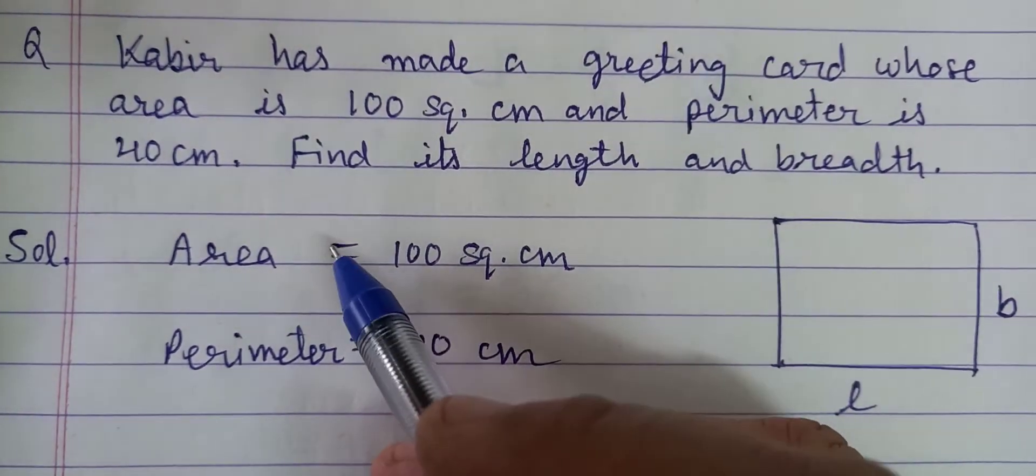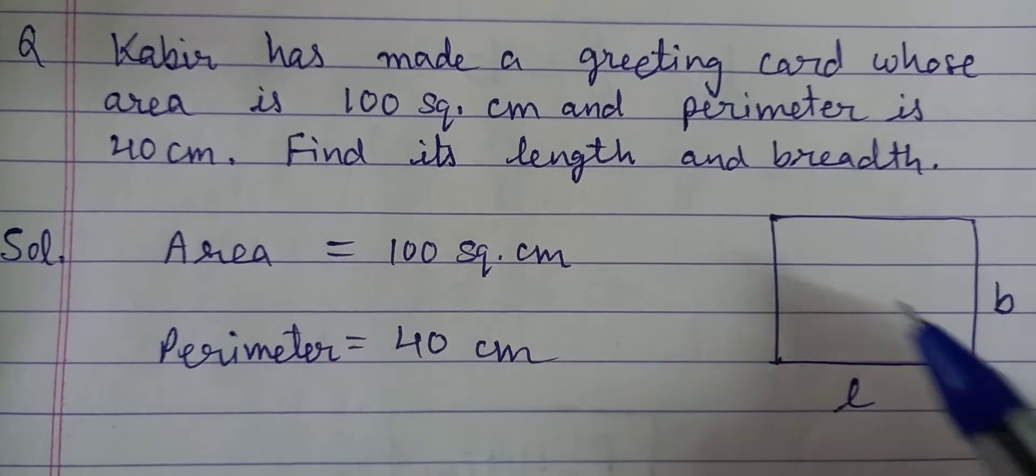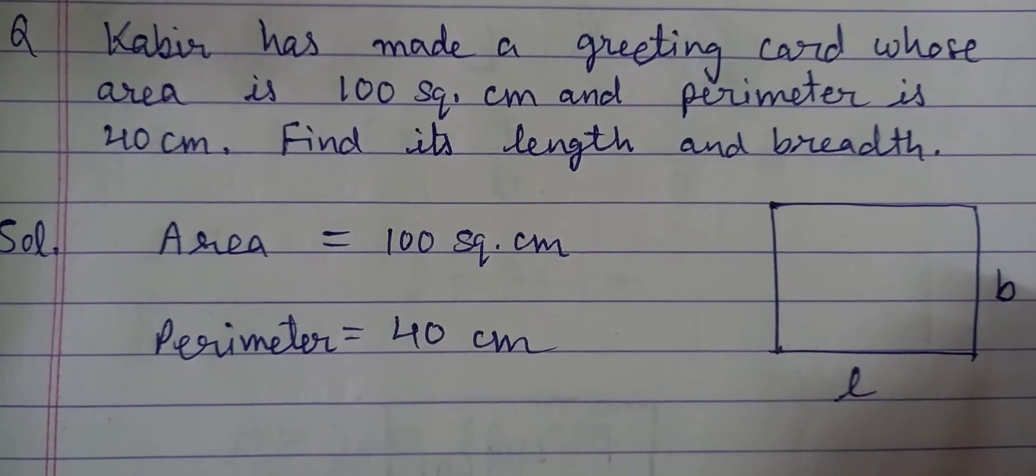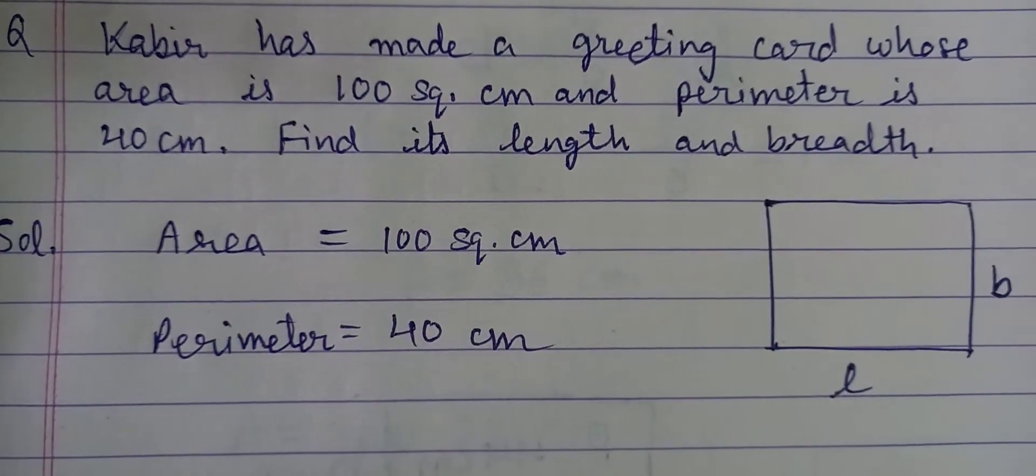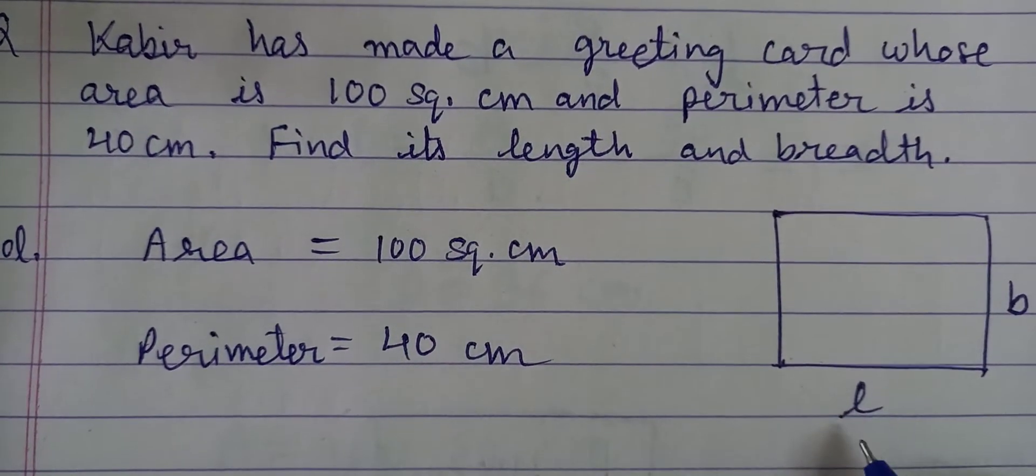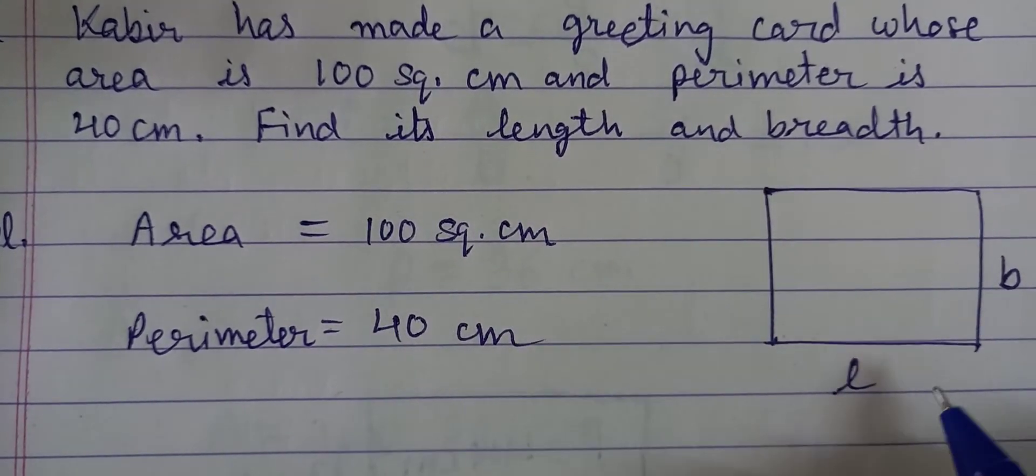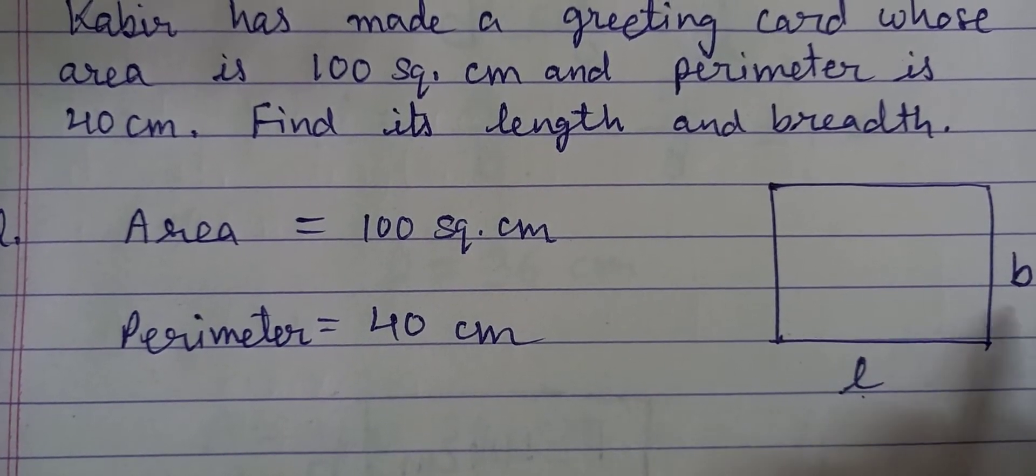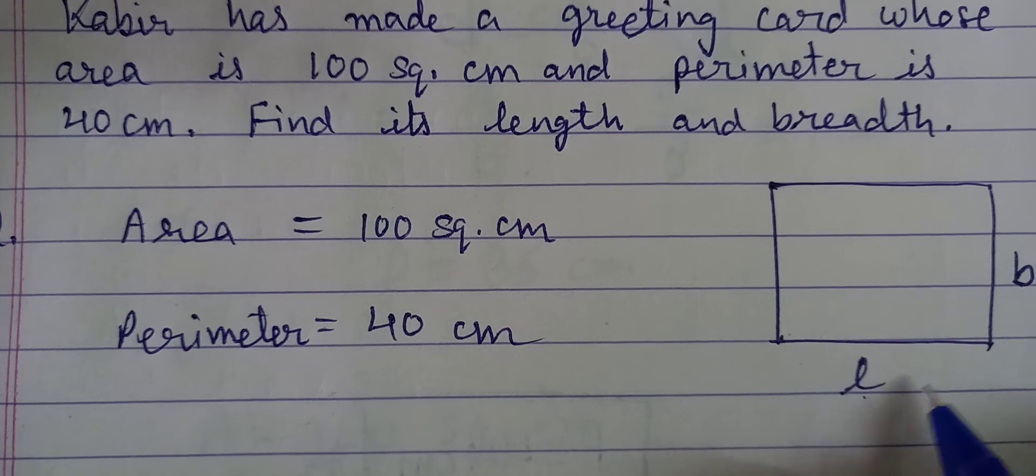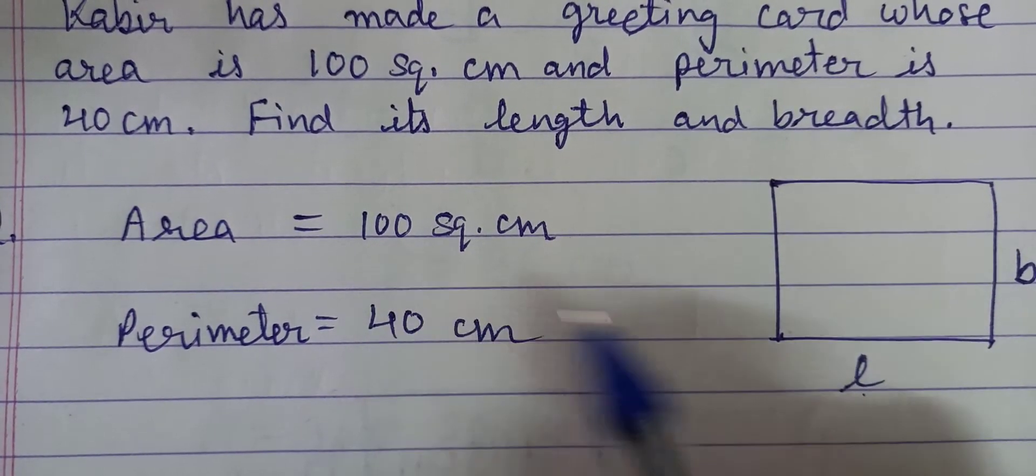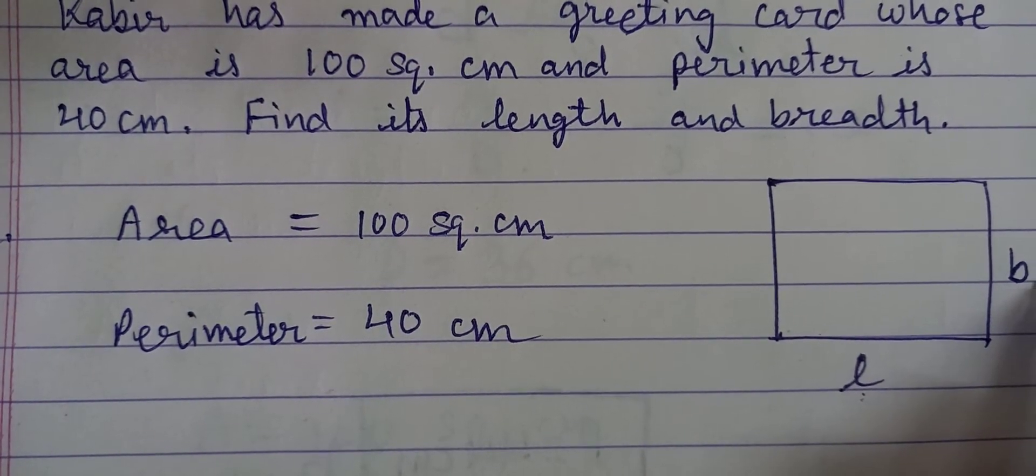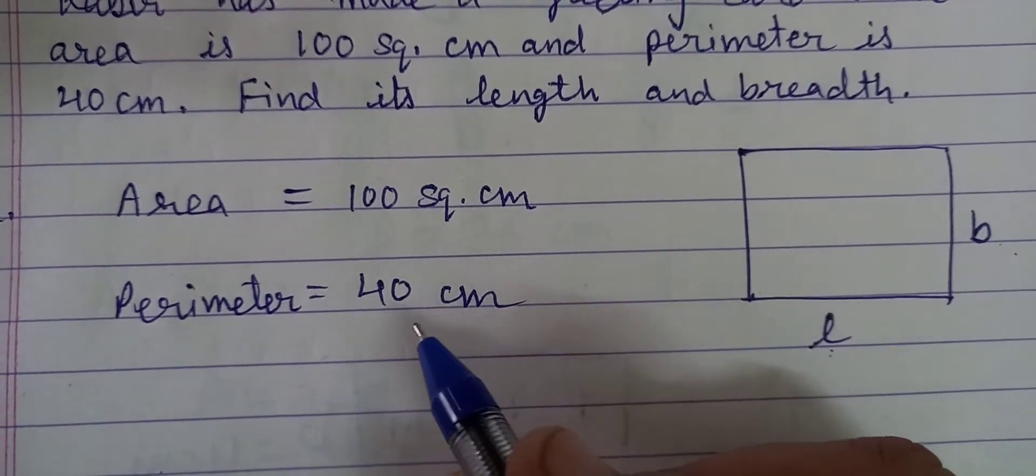Now here is the area and the perimeter, and we need to find length and breadth. So we will do this with trial and error method. We know that L and B both should be multiplied by 100 and add and double by 40.